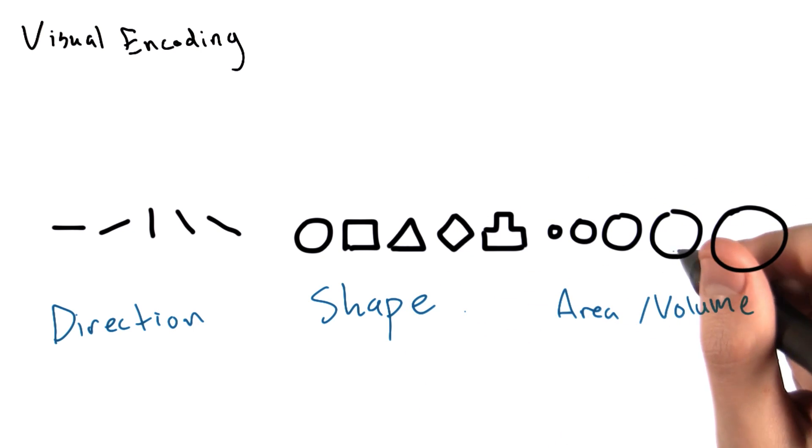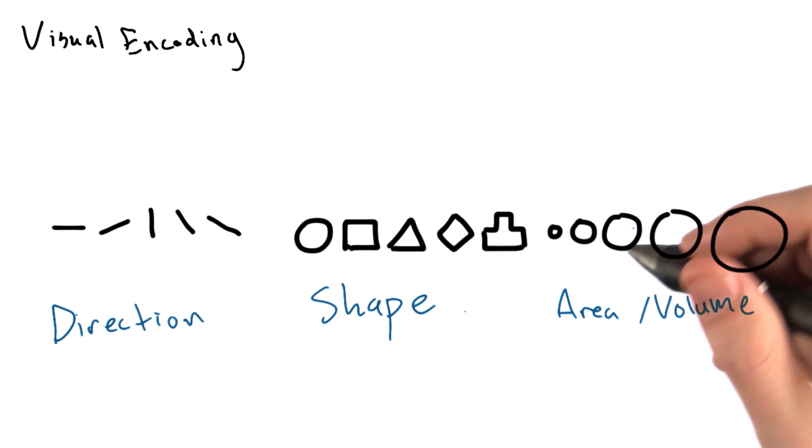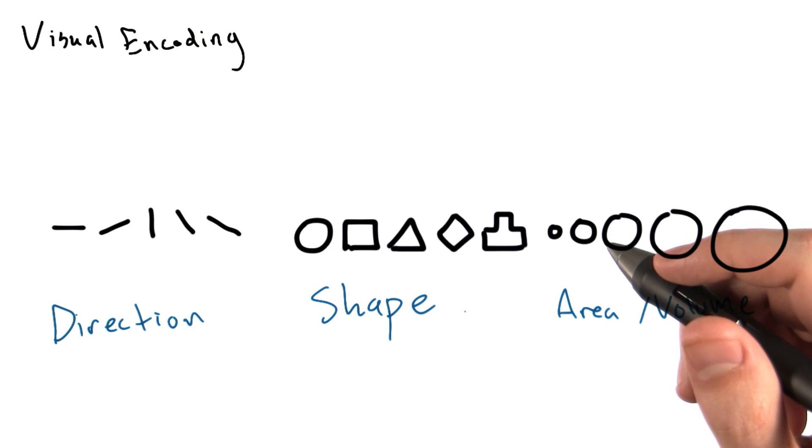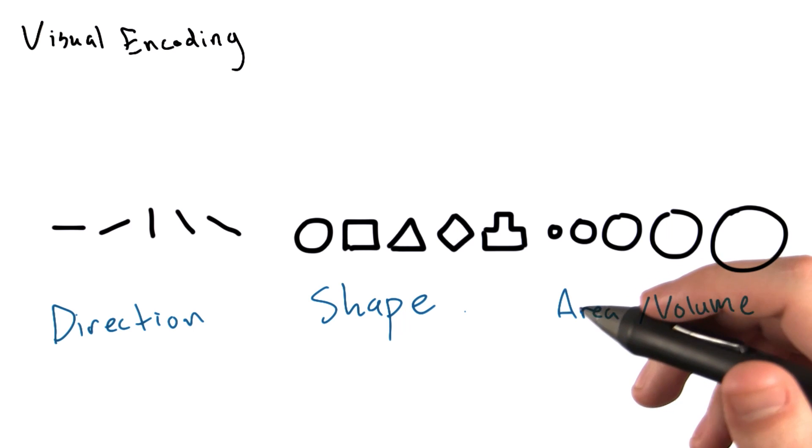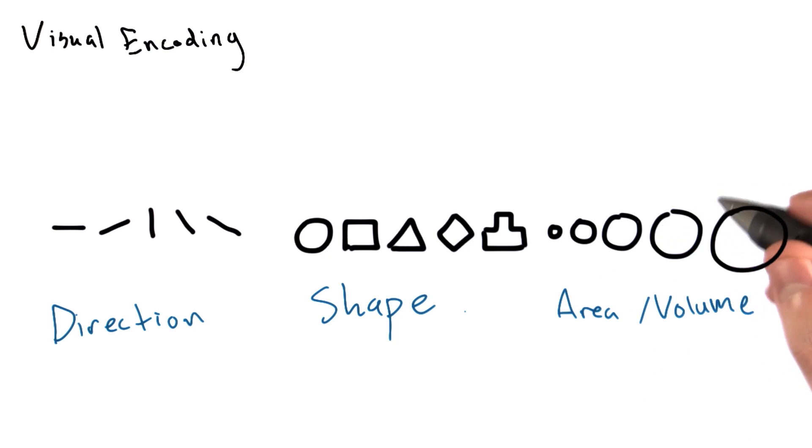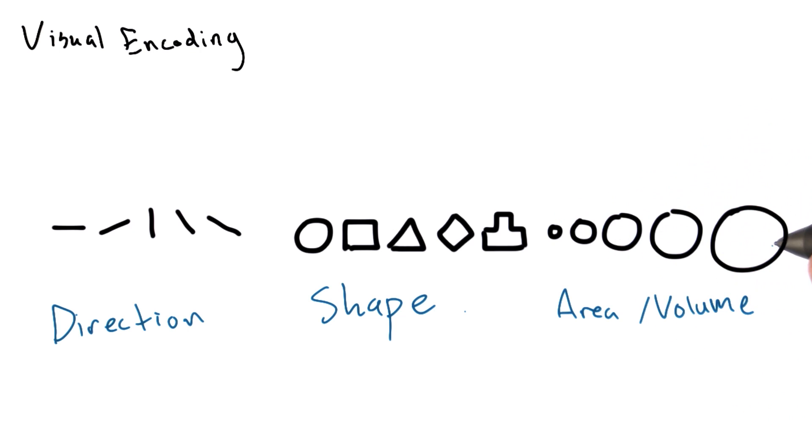We can also use the area or volume of our shapes to encode information. Bigger objects typically represent greater values. Like length, when we encode information with an area or a volume, we are basically representing our data with size. So say we're using circles, the greater the value of the data point, the bigger our circle is going to be.